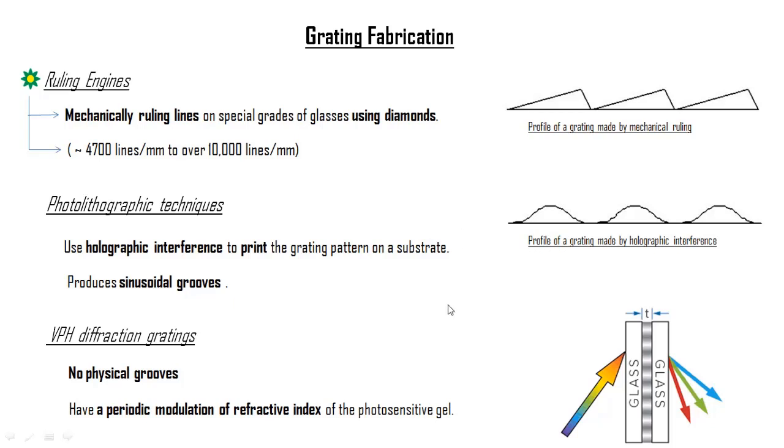Later, photolithographic techniques created gratings from a holographic interference pattern. Holographic gratings have sinusoidal grooves and may not be as efficient as ruled gratings. Many diffraction gratings use a photosensitive gel between two substrates. A holographic interference pattern exposes the gel which is later developed. These gratings are called volume phase holographic diffraction gratings or simply VPH gratings.